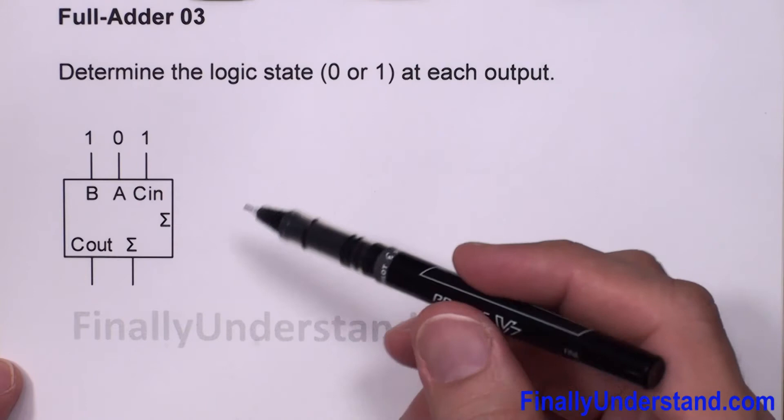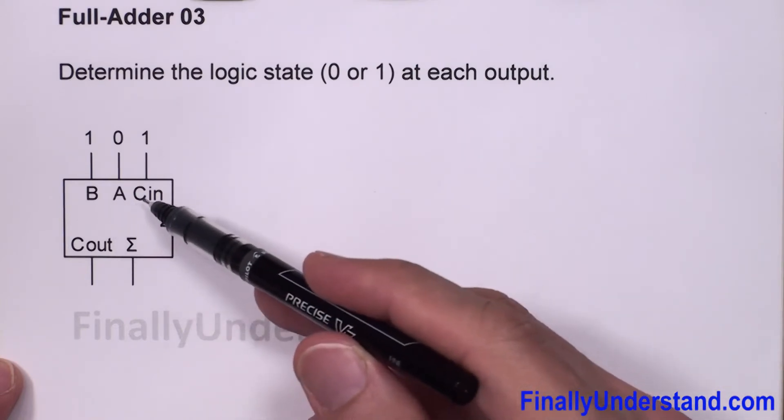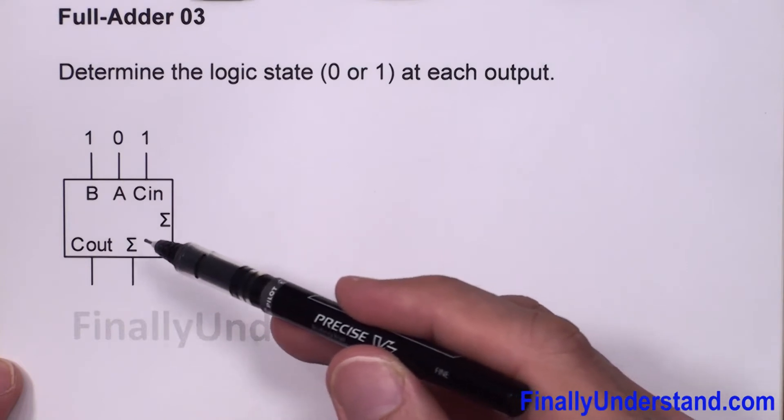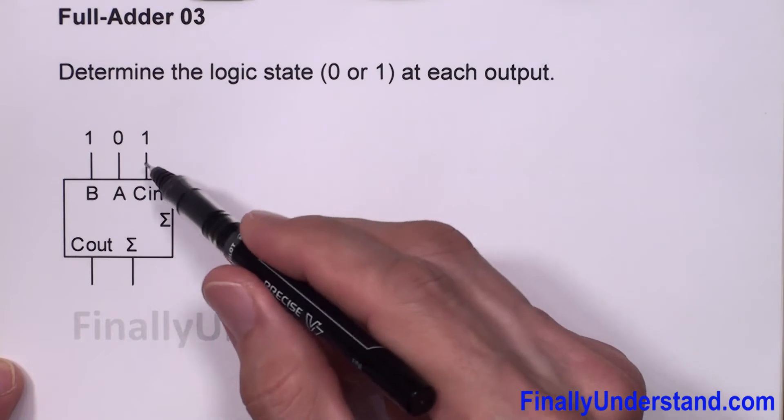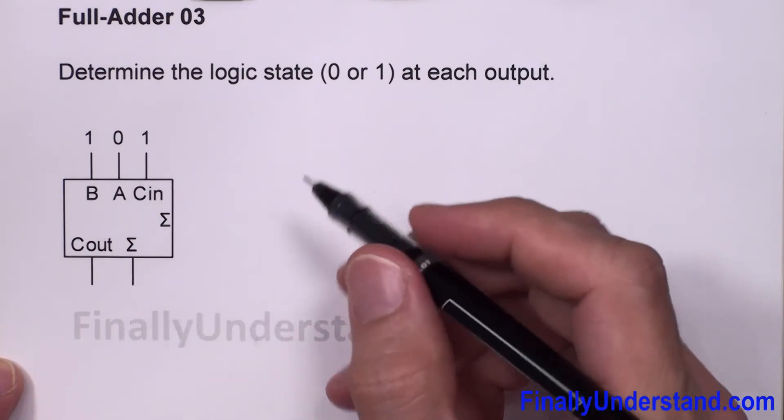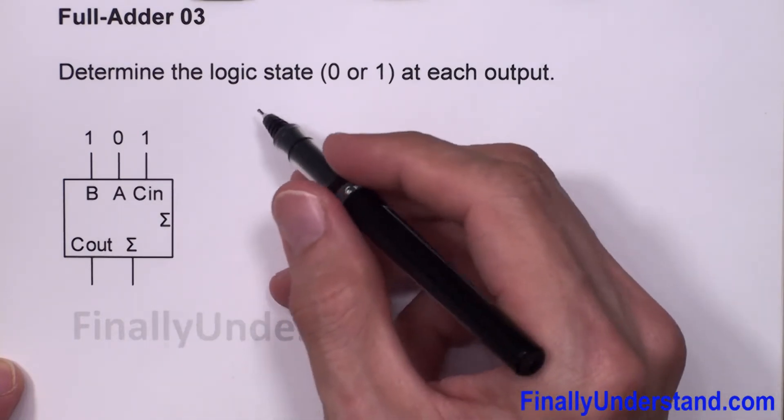In other words, we have two exclusive OR gates inside of it, we have two AND gates and one OR gate. But instead of drawing so many gates we can just simply draw the block diagram.